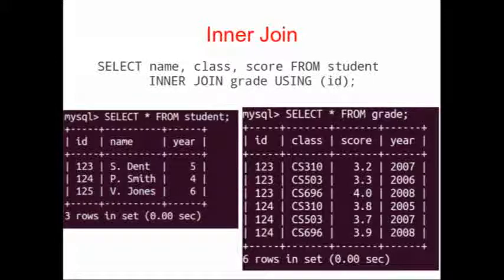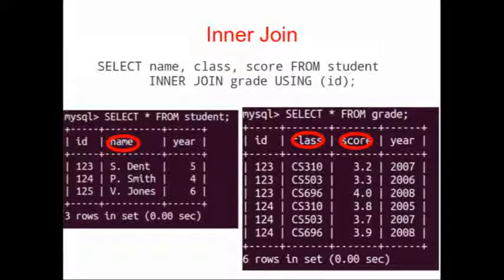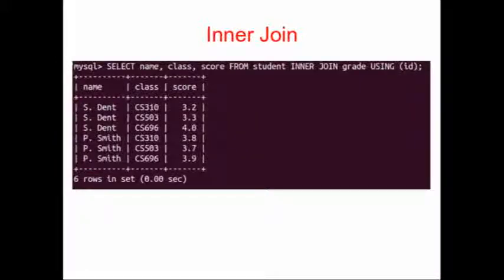If we'd like to join together the student's name with their class and the score that they got from that class, we can use the inner join shown at the top: SELECT name, class, and score FROM student INNER JOIN on the grade table, USING ID as the key to join things together. The output will combine the name from the student table and the class and the score from the grade table, using the ID to join those two things together. So the output shows name, class, and score — our students, the classes they took, and the scores that they got.